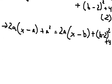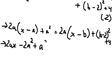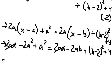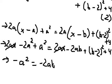So 2a multiplied by x and negative a — that is, 2a times (x minus a). Then 2a times x plus 2a cancel, and we also have 2a to the power of 2 here. We need to expand this expression.